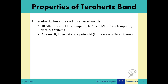Terahertz band has one huge advantage over other microwave electromagnetic waves: a bandwidth of a length between 10 gigahertz to several terahertz that is unused by any other technologies. As a comparison, current Wi-Fi systems utilize a bandwidth of only 10 or 20 megahertz. Consequently, the terahertz band and terahertz signaling offers extremely high data rates.